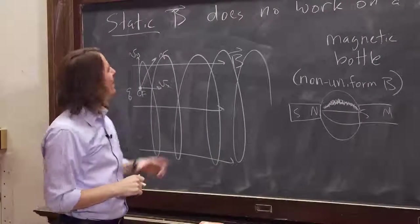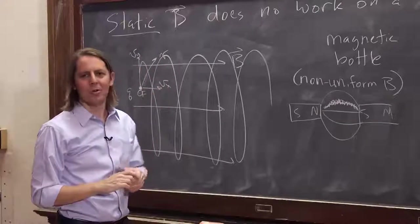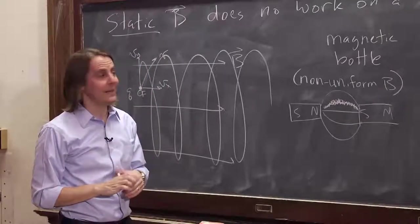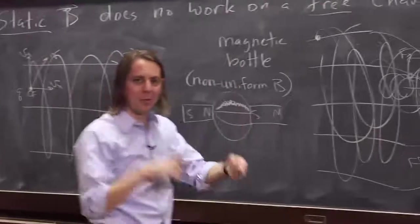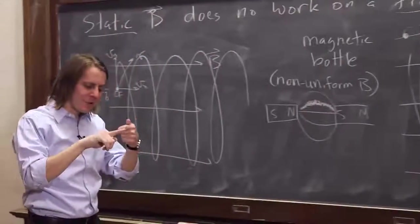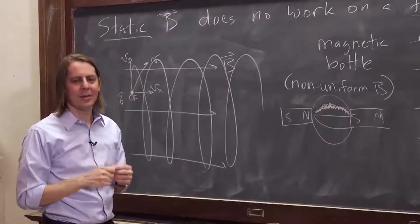So the bottom line is a static B field never does work on a free charged particle. It just can't. It can't because it always pushes. Its force is always at right angles to the velocity. It just physically can't do work.